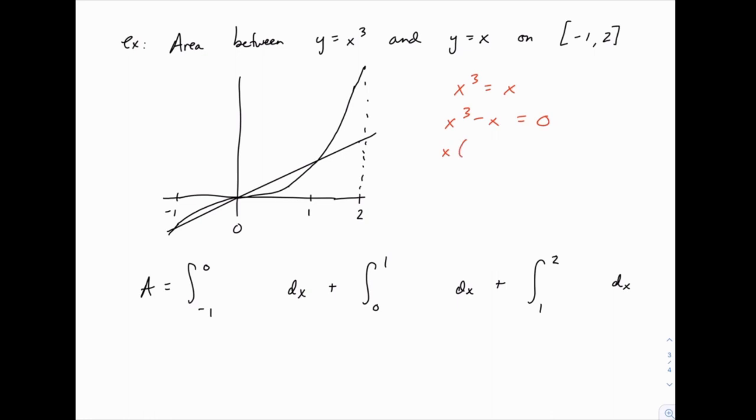We can factor an x, and then x squared minus 1 factors further to x plus 1, x minus 1. Now notice that there are three answers: one where x equals 0, one where x equals negative 1, and one where x equals positive 1. That's where the limits of integration came from.